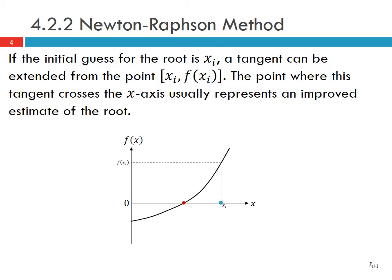We have an estimate xi, and we can evaluate the function at f of xi. Then we can look at the slope f prime of xi and find where this slope meets the x-axis. This gives us our next estimate — our improved estimate of the root — which we call xi plus 1.